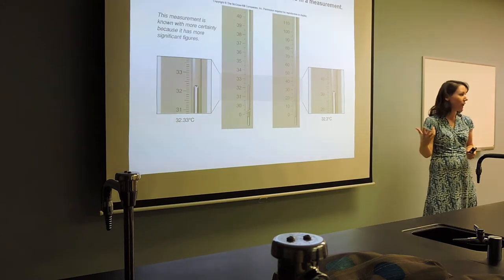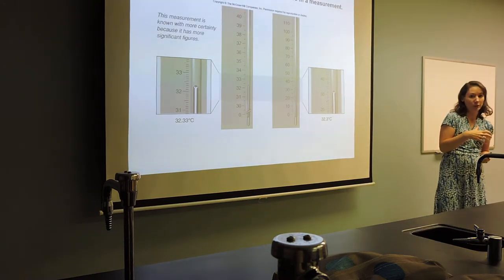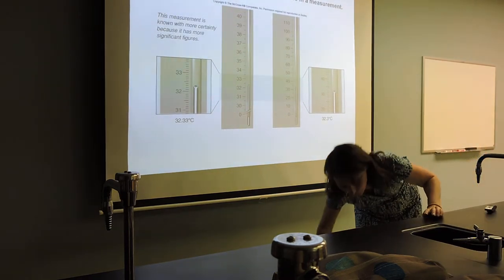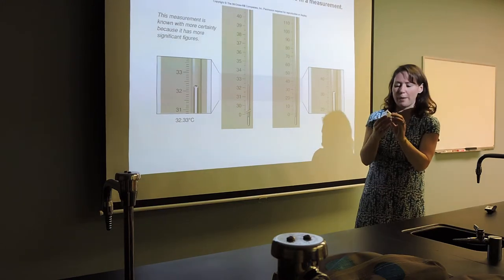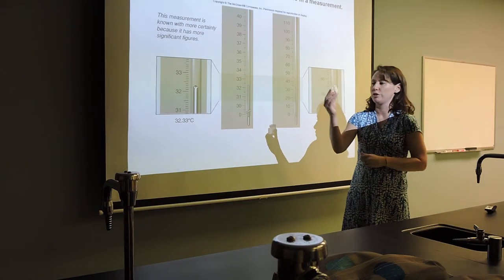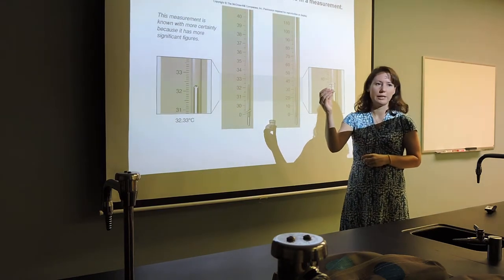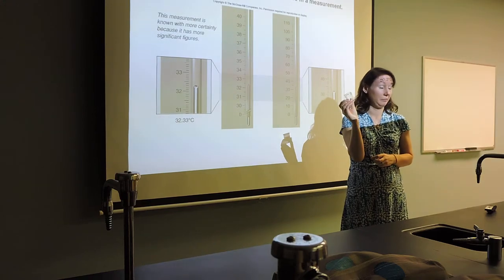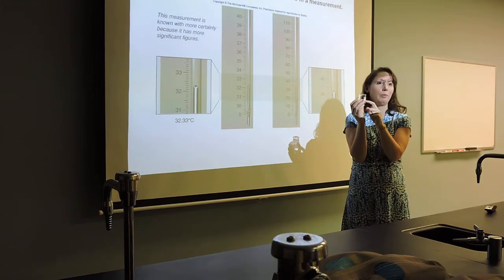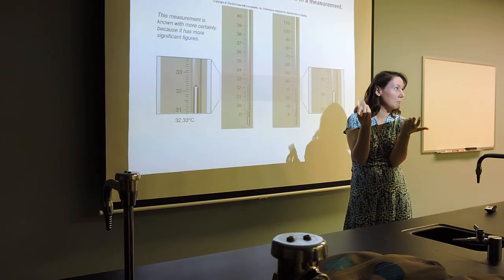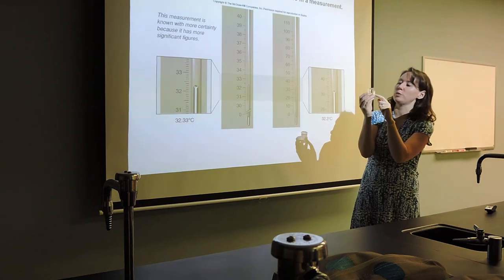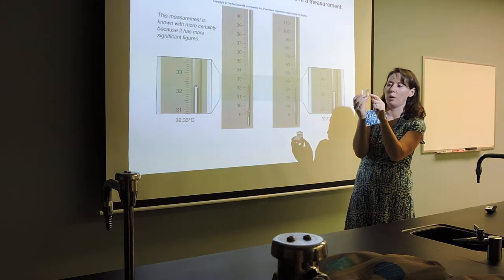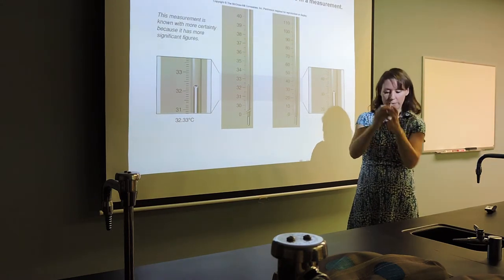Significant figures tell the reader how accurate is the piece of equipment that I'm using. Is there a lot of guesswork involved or is there no guesswork involved? If I'm measuring volume using a beaker, beakers are really sloppy — they're measured in tens, twenties, 25s, depending on the beaker. There's a lot of guesswork; it could be 20, it could be 22, who knows. There's no calibration between 20 and 40, there's just one little tick mark.